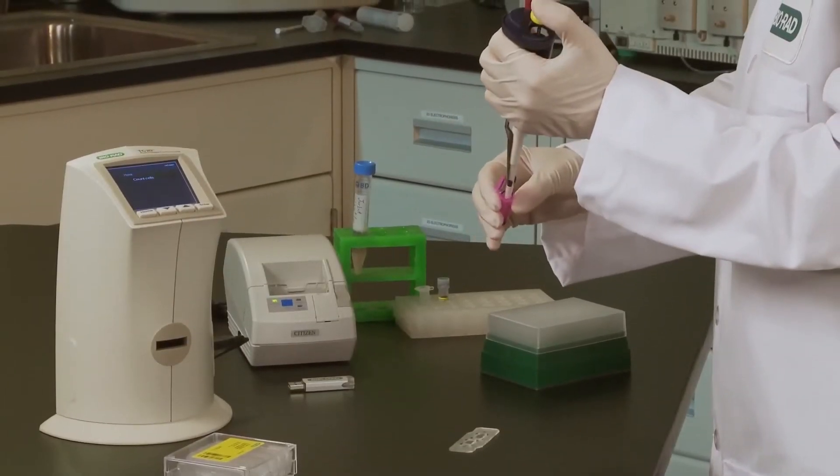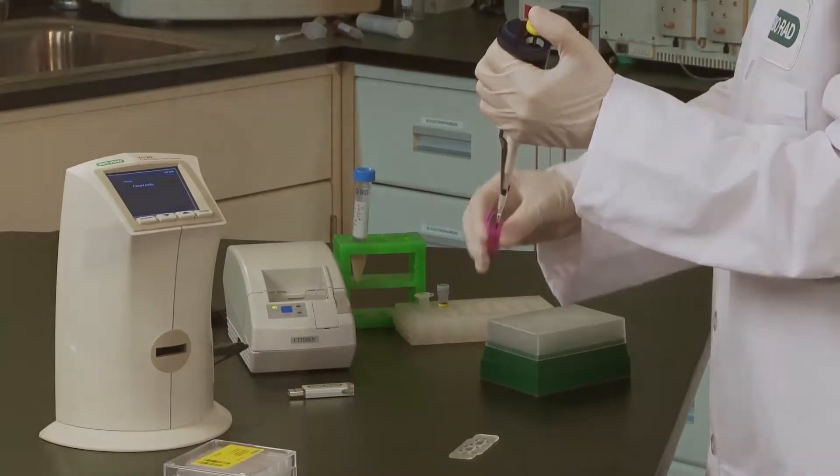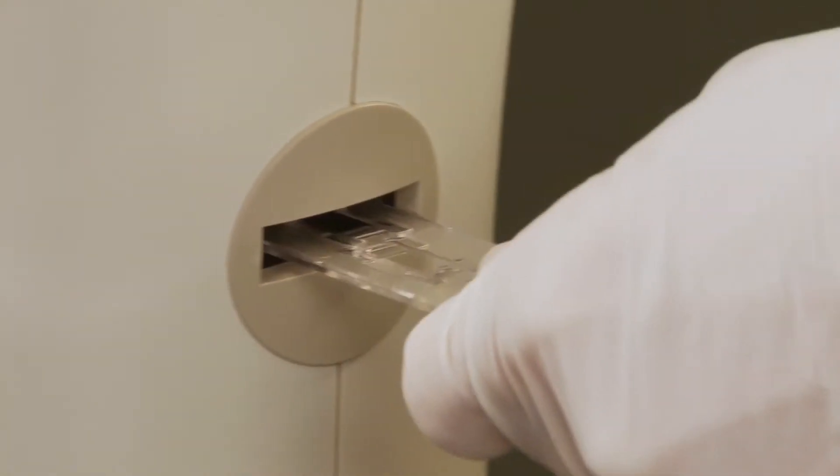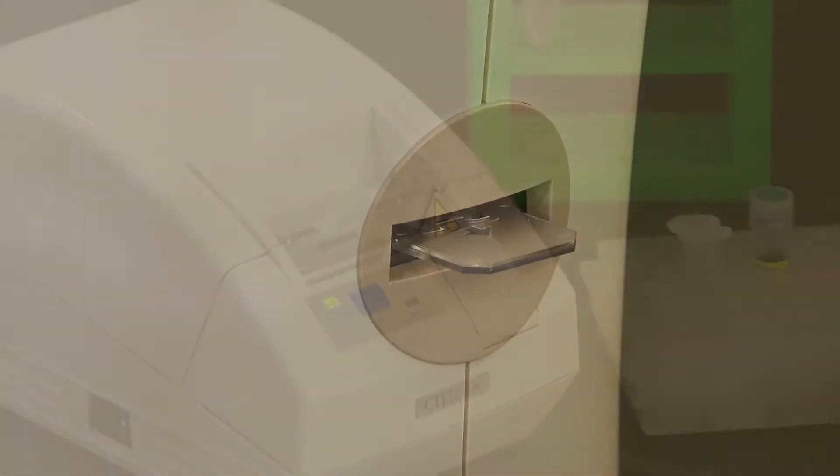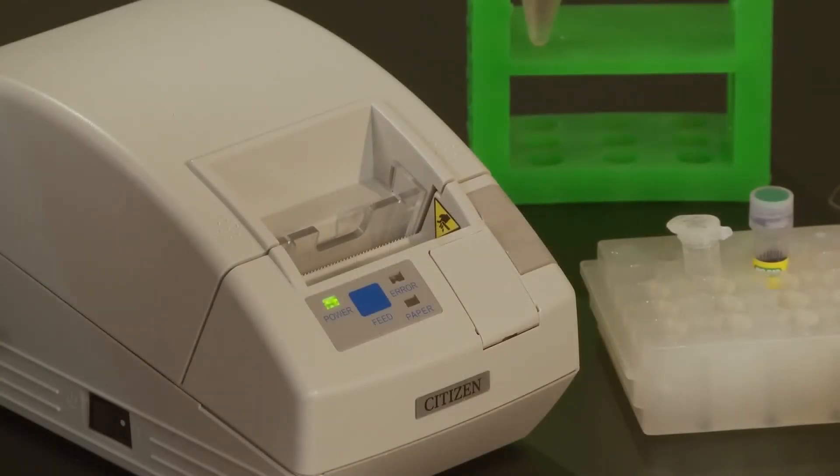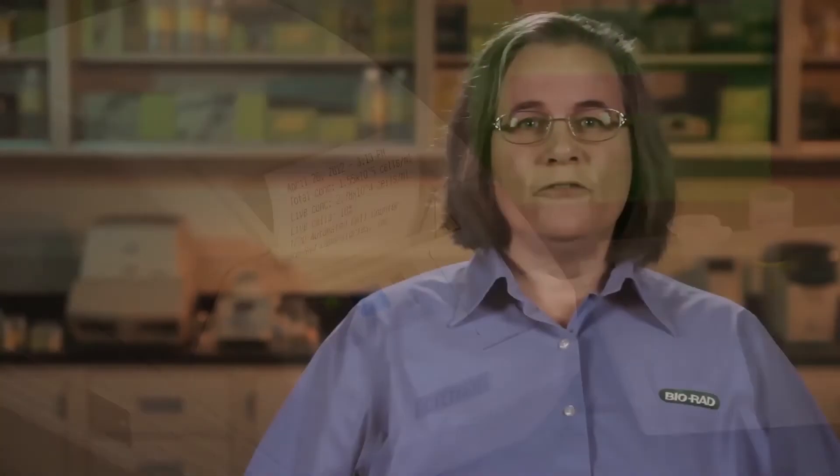There are going to be times when even the most basic and reliable equipment needs maintenance to keep it running smoothly, and that includes peripheral gear like the printer for your TC10 or TC20 cell counter. If you're experiencing misalignment of printed labels, this simple fix should have you printing again in no time.